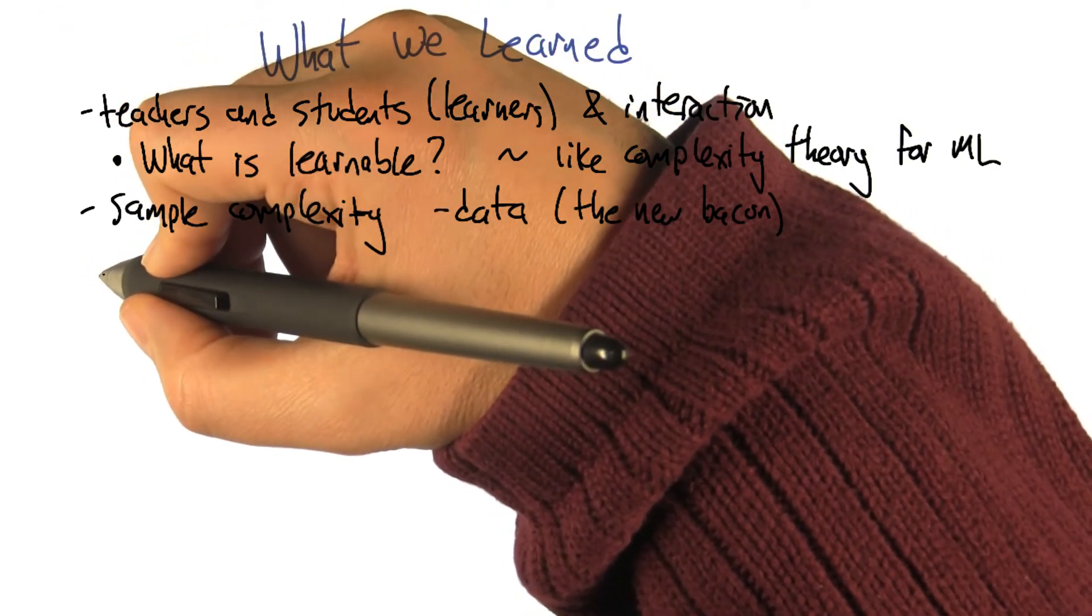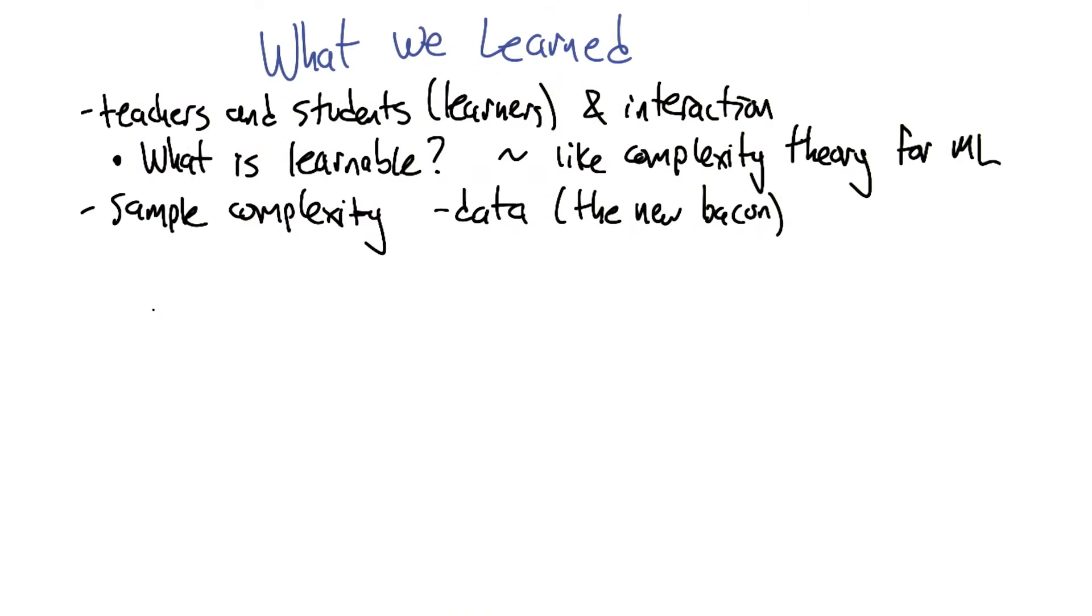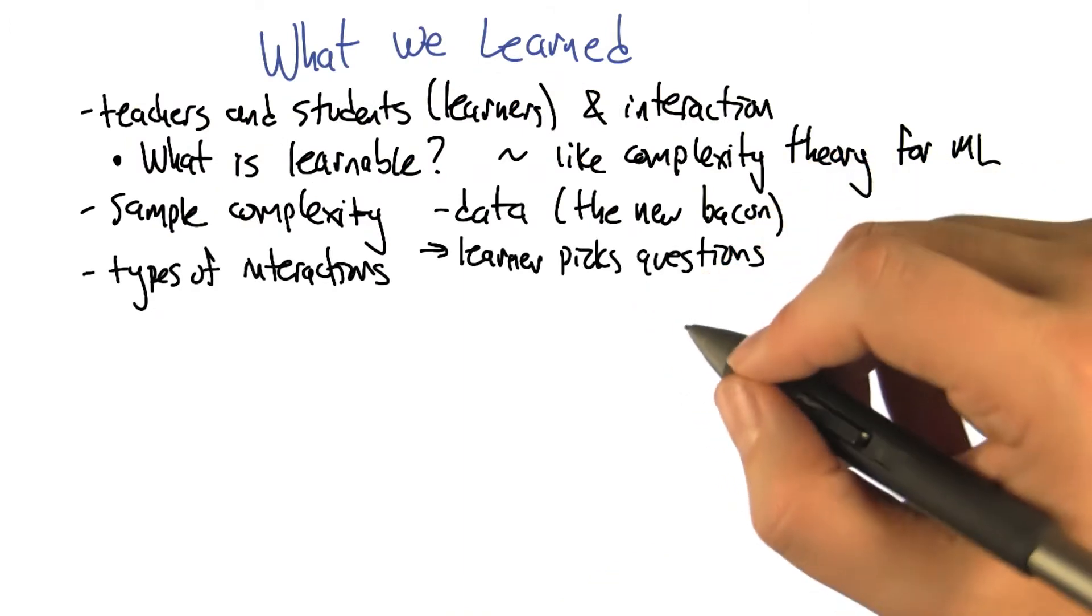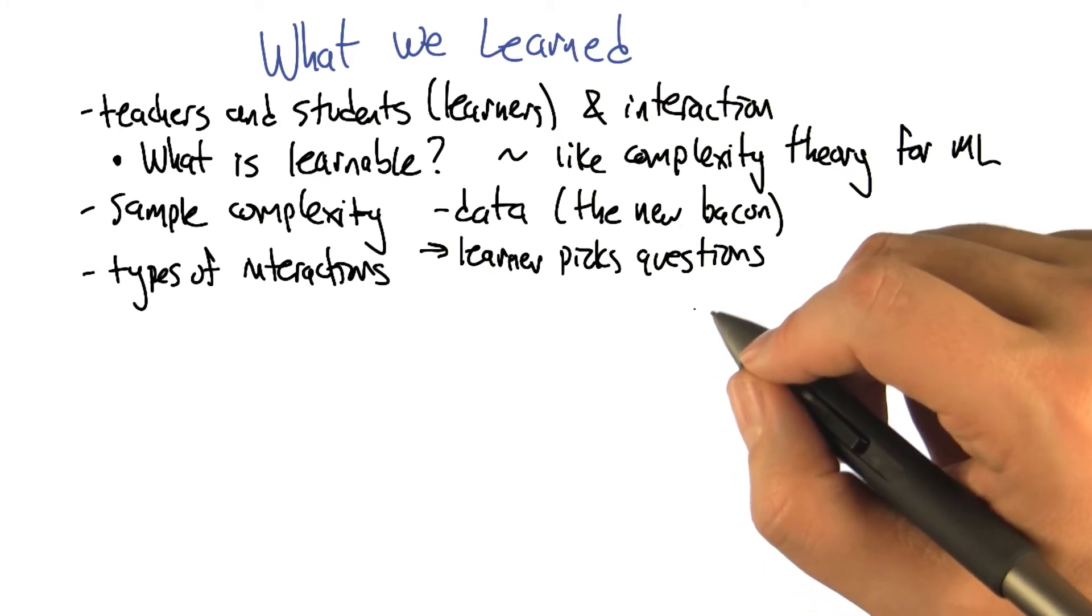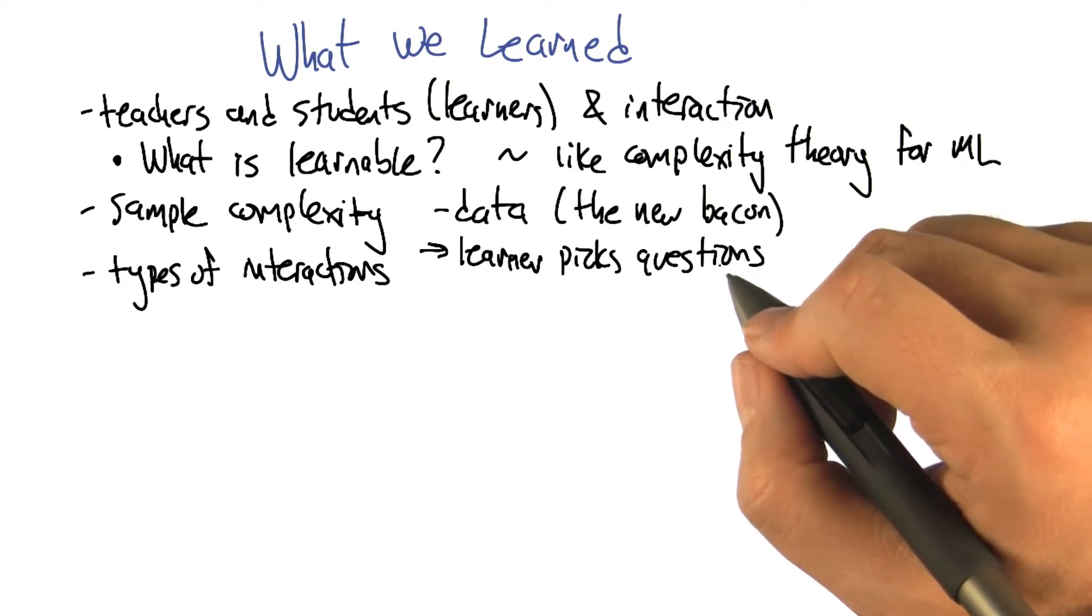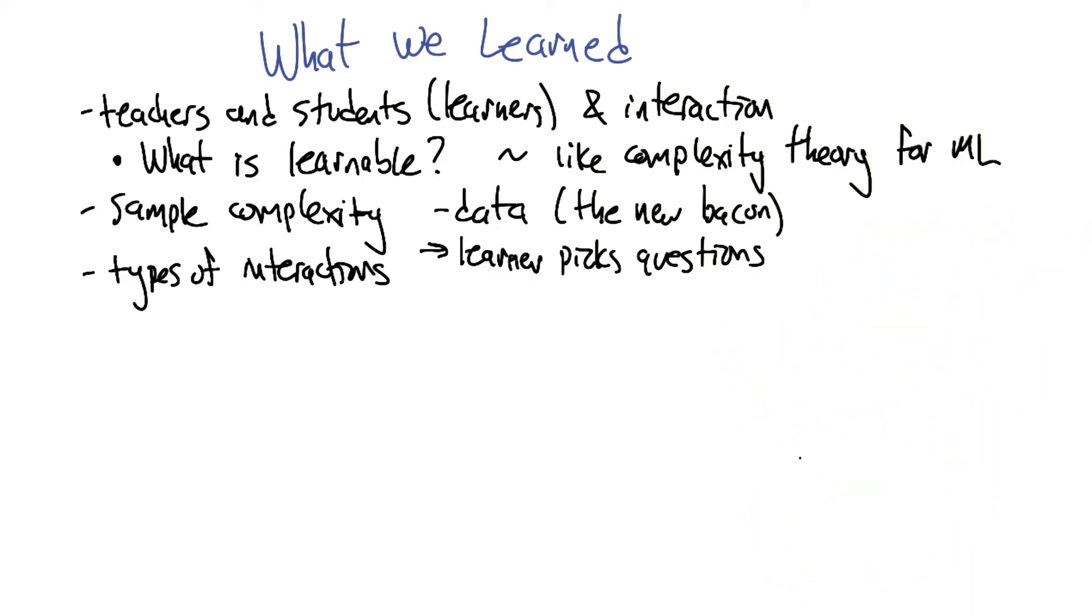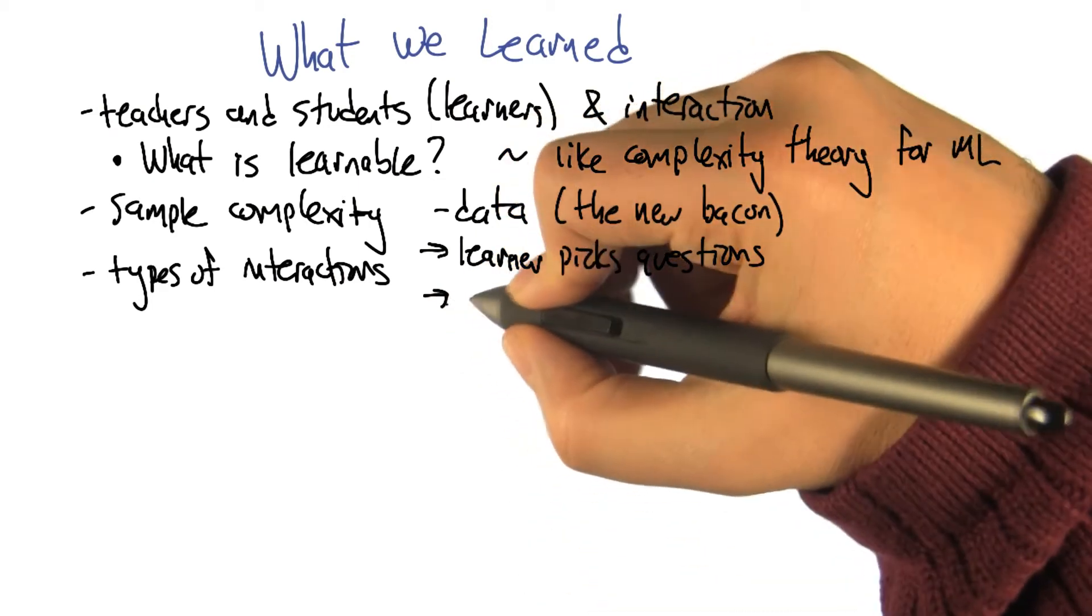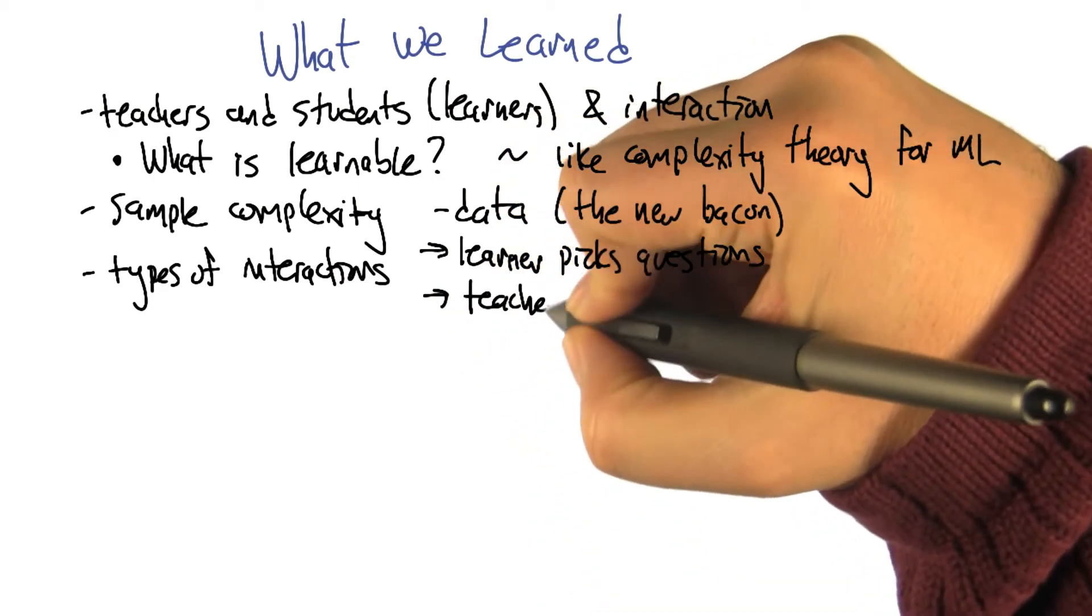So in particular, we talked about what would happen in a world where the learner had to ask all the questions. And that's powerful because the learner knows what the learner doesn't know, but the learner doesn't know what the learner needs to know. So that is somewhat powerful, but it may be useful for the teacher to be more involved. So that's the other thing where the teacher gets to actually pick the questions.